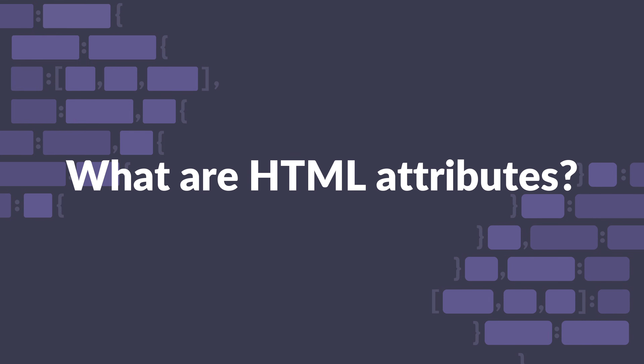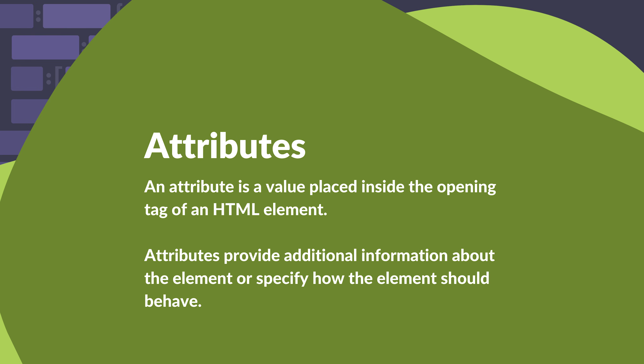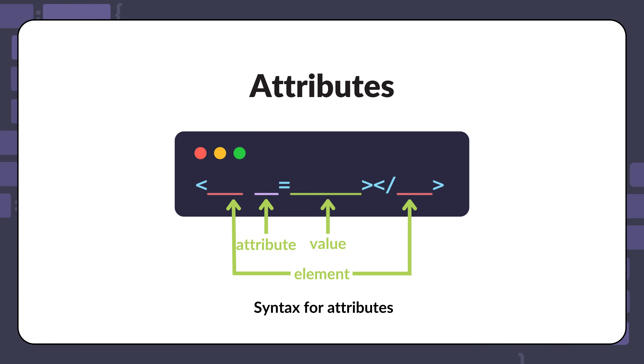An attribute is a value placed inside the opening tag of an HTML element. Attributes provide additional information about the element or specify how the element should behave. Here is the basic syntax for an attribute: the attribute name is followed by an equal sign and a value in quotes. The value can be a string or a number depending on the attribute.